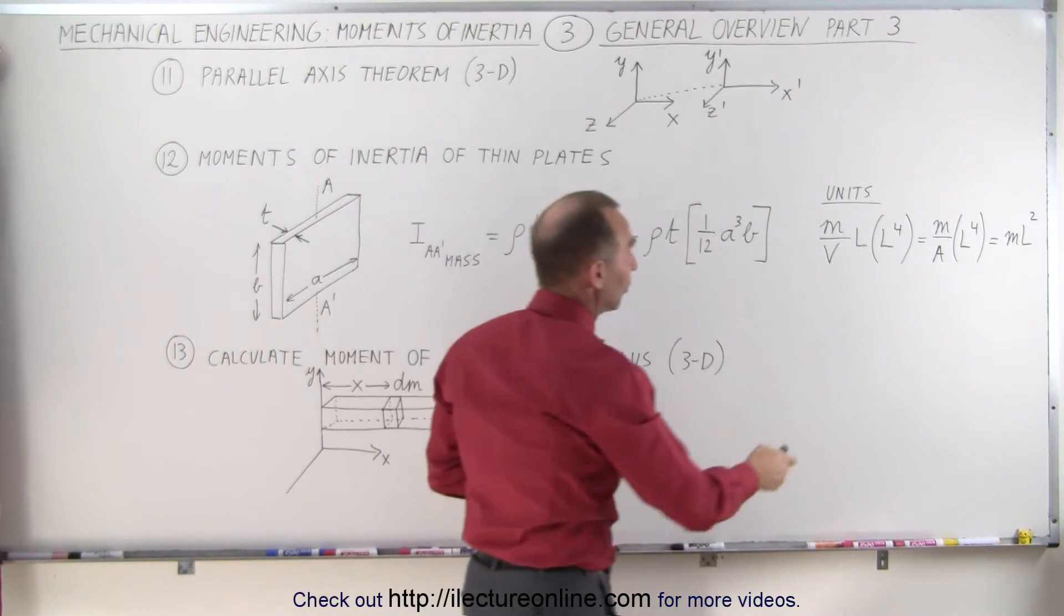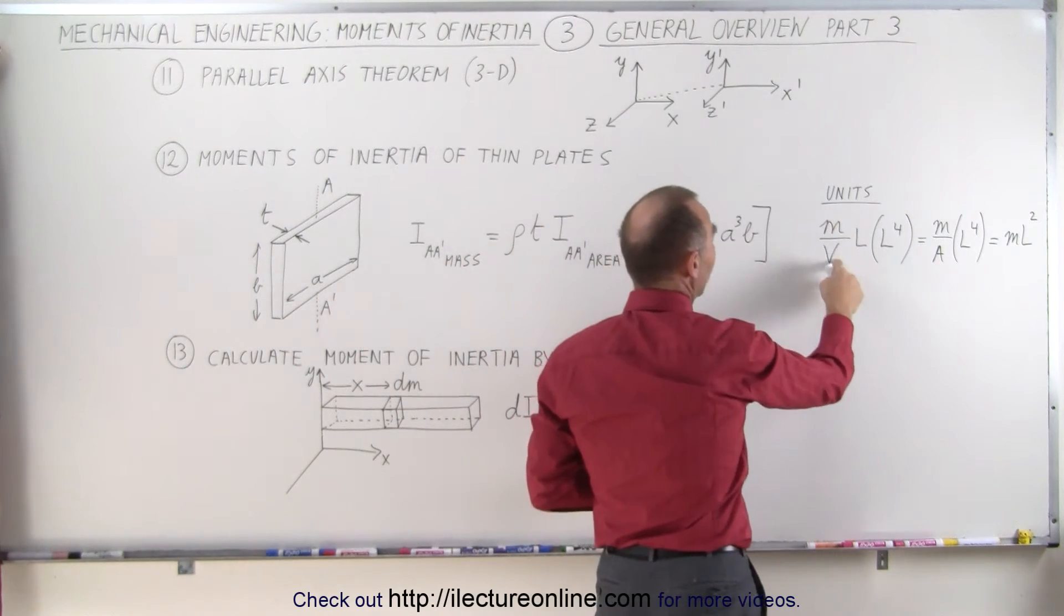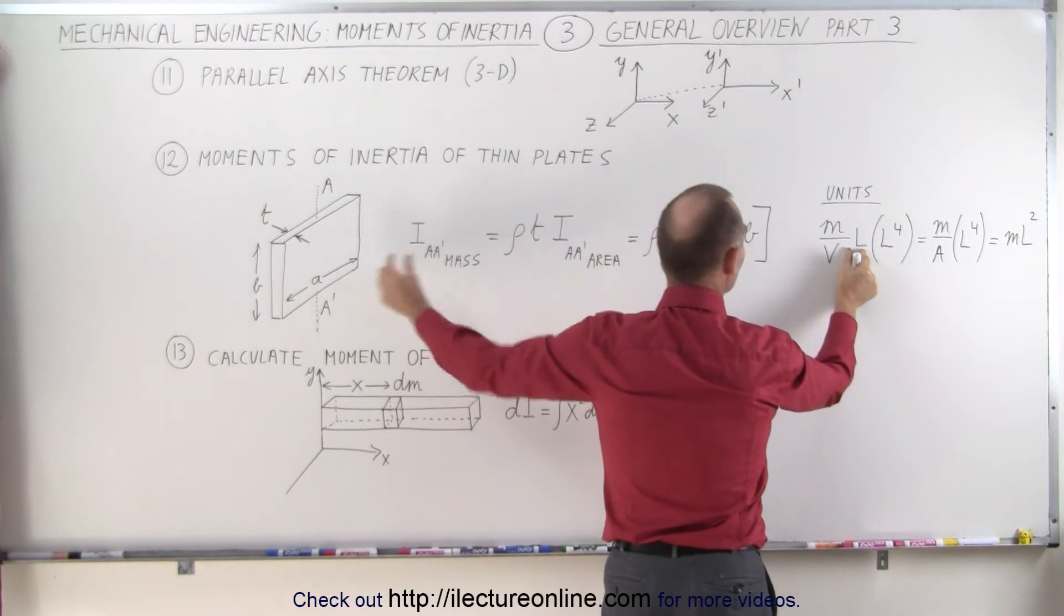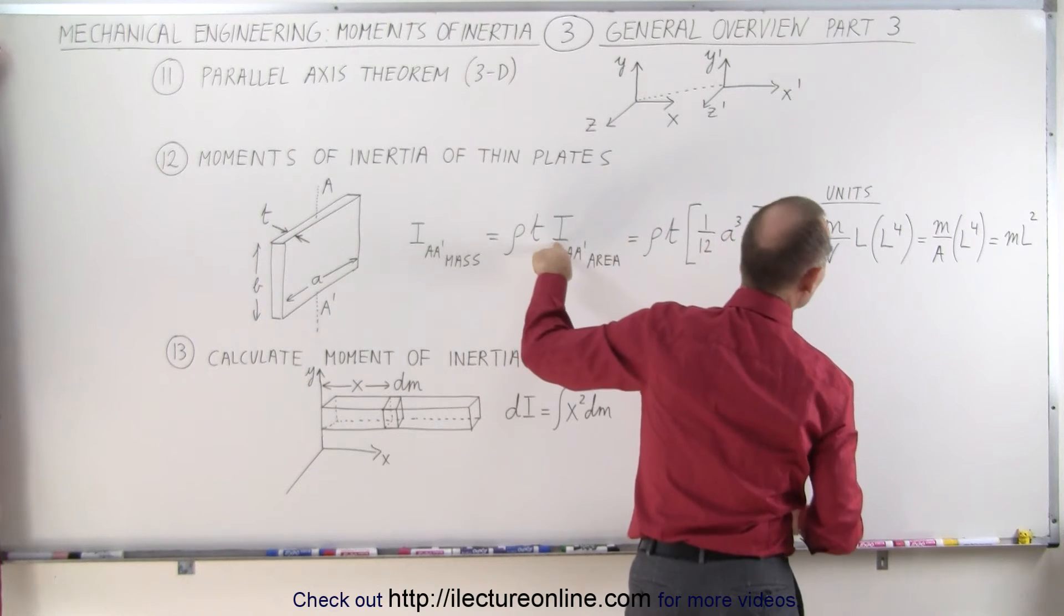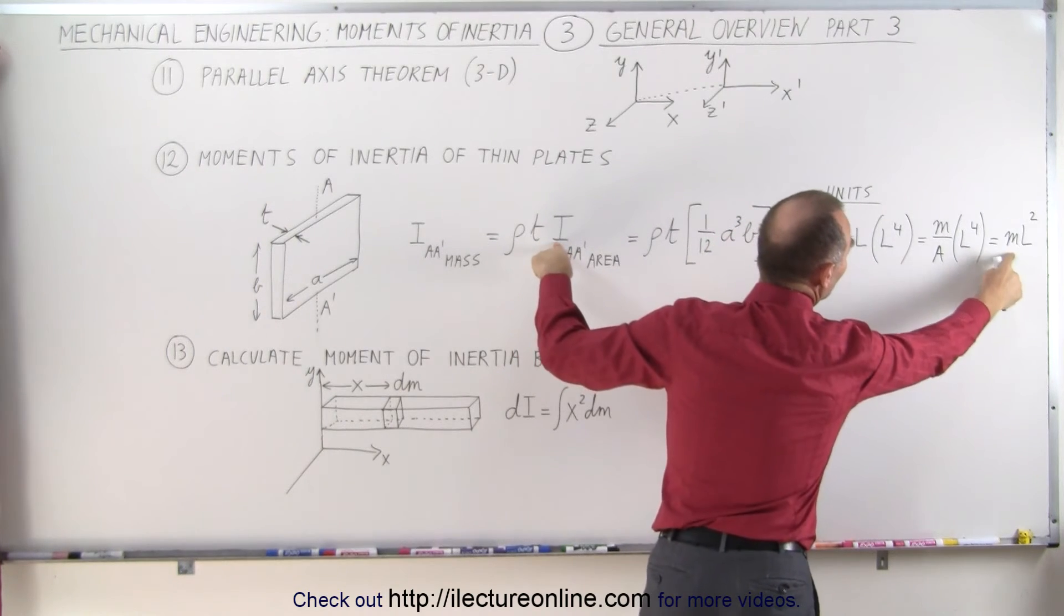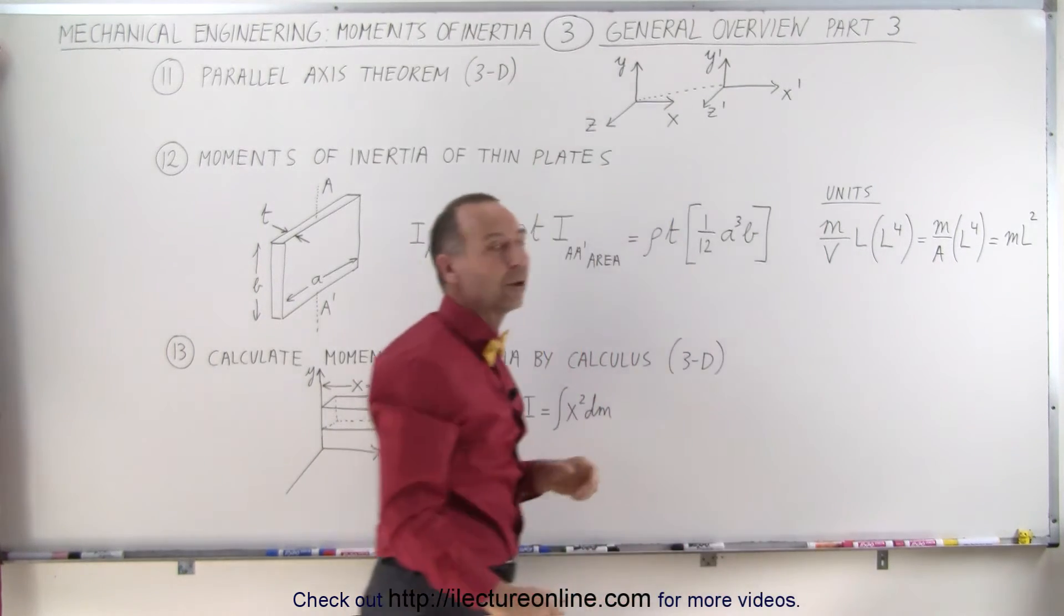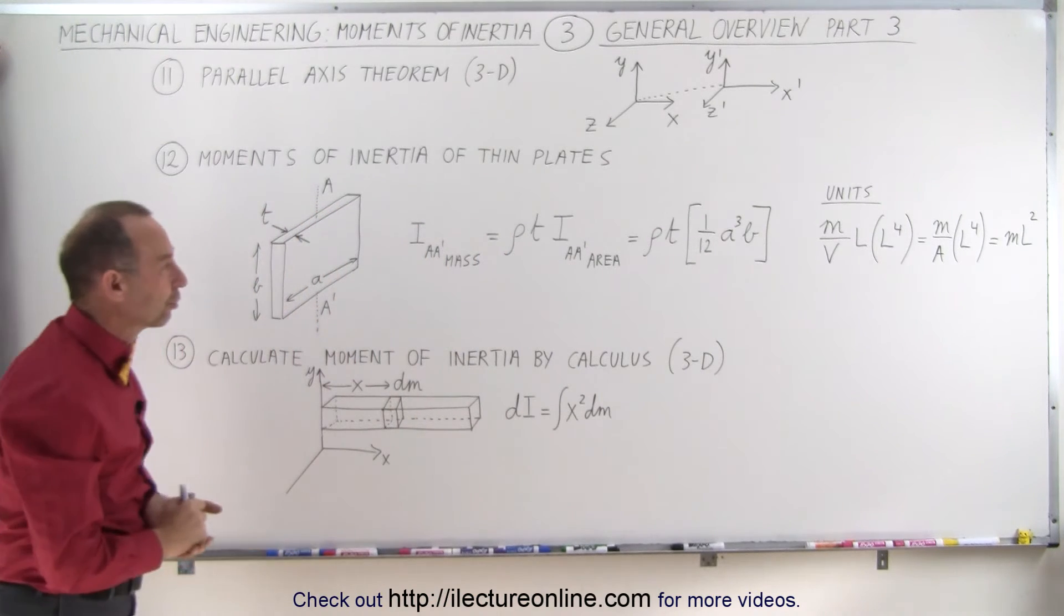Units seem to work out. We start with mass per unit volume for density times the length for the thickness times length to the fourth power for the moment of inertia of the area, and then you can see that that reduces to ml squared, which is the units of moment of inertia for a mass.